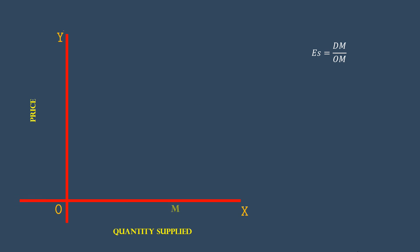This supply curve is vertical and parallel to Y-axis. It means the distance between D and M is zero. Zero divided by OM is zero. A vertical supply curve signifies perfectly inelastic supply.